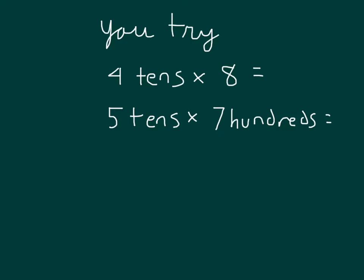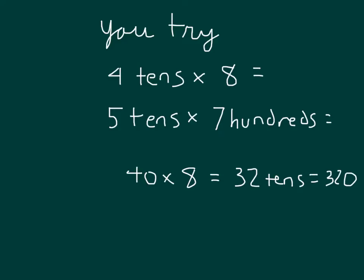You try: 4 tens times 8, and 5 tens times 7 hundreds. Pause the video and work these problems out. For 4 tens times 8, that is 40 times 8. 8 times 4 is 32, so we're talking about 32 tens. And 32 tens equals 320. For 5 tens times 7 hundreds, 5 times 7 is 35, and 10 hundreds is 1,000, so we're talking about 35 times 1,000, which is 35,000.